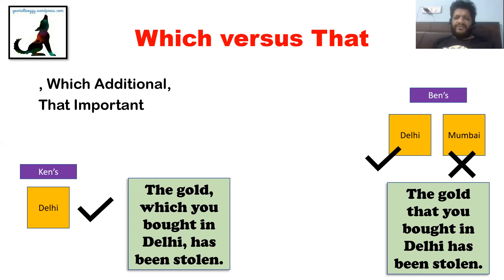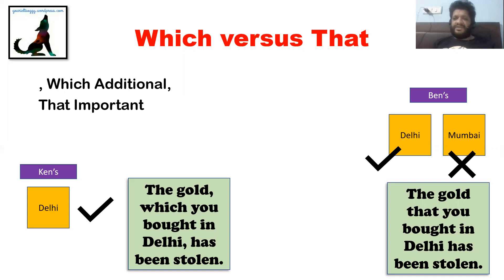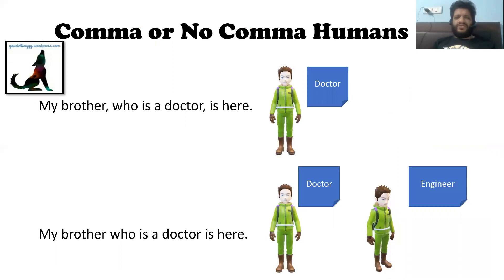In Ben's case, there were two types of gold — Delhi and Mumbai. Only one kind was stolen; the Mumbai one is safe. In order to convey the complete scenario, Ben has to mention the Delhi point so his father knows the Mumbai part is safe. So Ben says: 'The gold that you bought in Delhi has been stolen.' By conveying this, his father will know he doesn't have to worry about the Mumbai gold because that is safe. The Delhi part is important here.